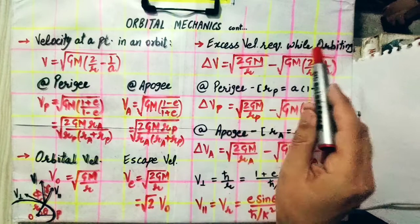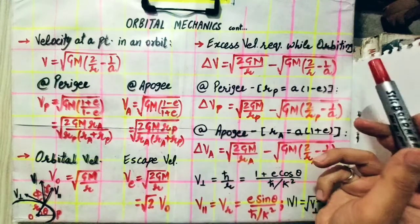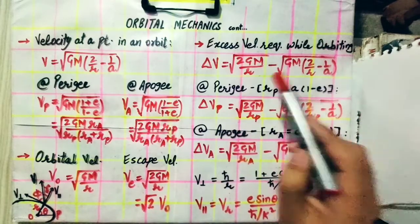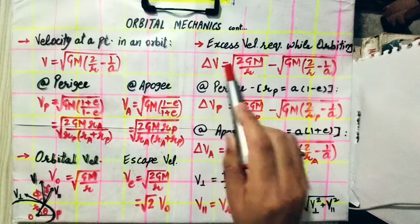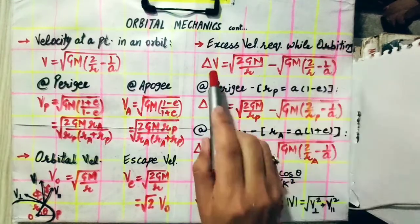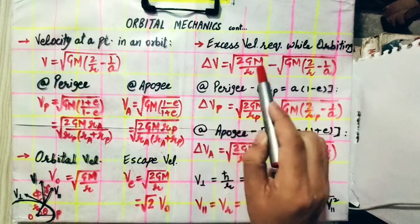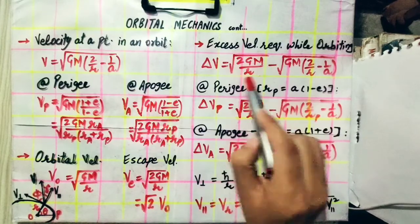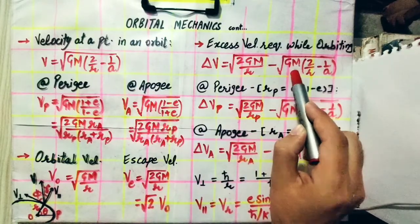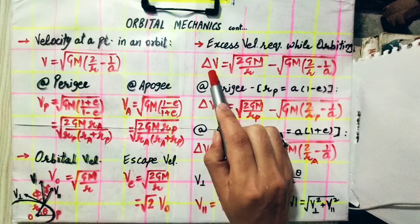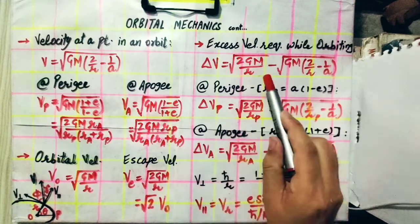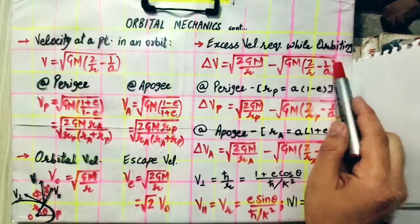Excess velocity required while orbiting to leave the influence of Earth gravitation or any planet gravitation is given by delta V, which is required to escape while orbiting. Delta V is the excess velocity required and it can be computed by the escape velocity minus the orbiting velocity. Escape velocity is under root 2GM by R minus orbiting velocity under root GM 2 by R minus 1 by A.